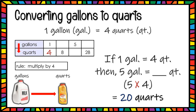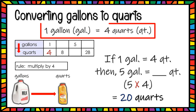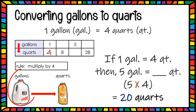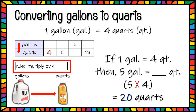Now let's start converting between the units. Let's convert gallons to quarts. Remember, one gallon is equal to 4 quarts. We are going to be converting from a larger unit to a smaller unit, and because of that we use the rule of multiplication — we multiply by 4. So one gallon equals 4 quarts; we can fill in the first space in the table.